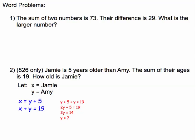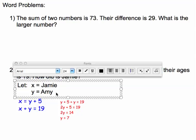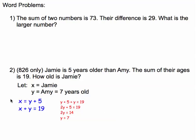So that gives me Amy's age, which I know is now seven, seven years old. But I need Jamie's age.